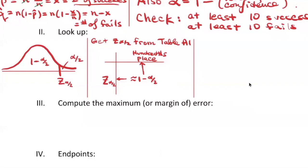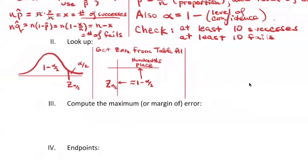It's easier to use Table A2 — that's a new one. All the z-scores are in the bottom row of the table, so you can get z-alpha-over-2 more easily from Table A2.